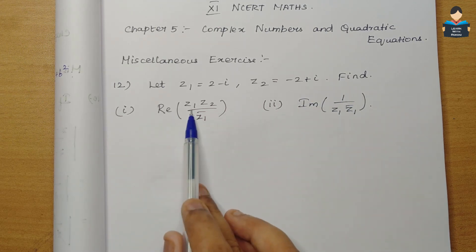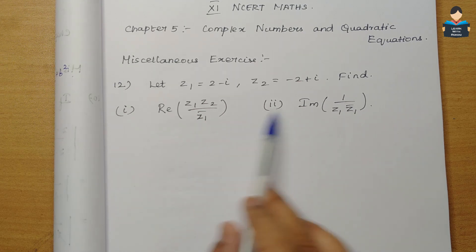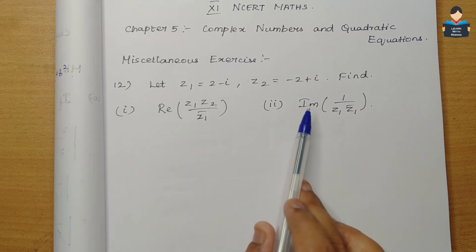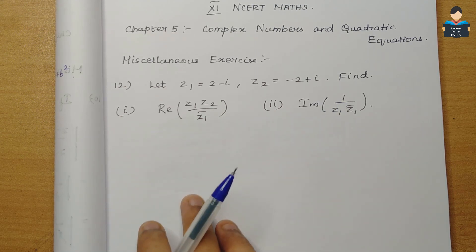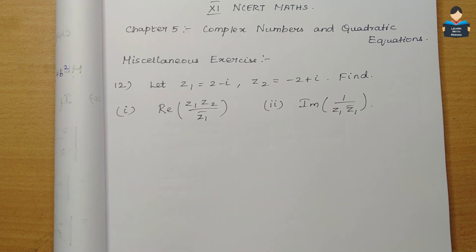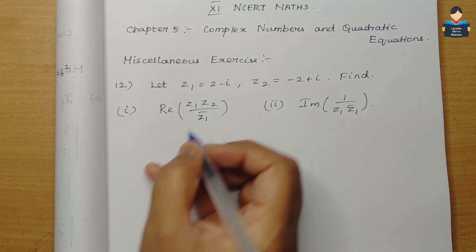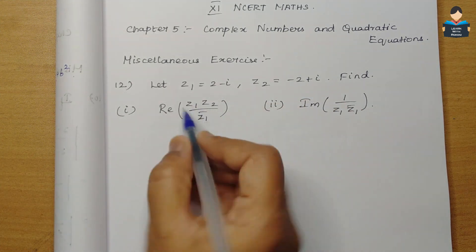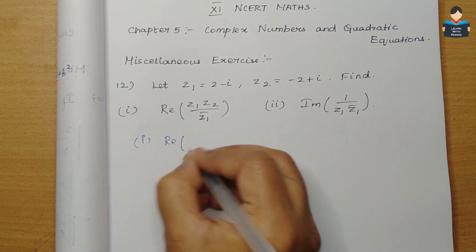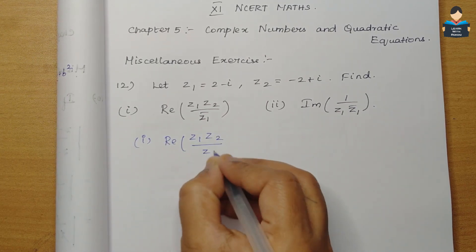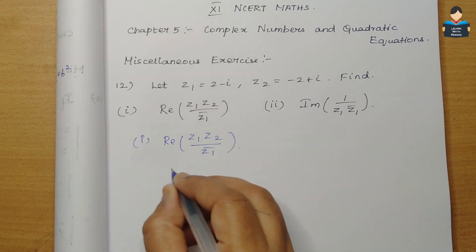We need to find: first, the real part of z1 times z2 divided by z1 bar; and second, the imaginary part of 1 divided by z1 times z1 bar. So first, let us find z1 times z2.